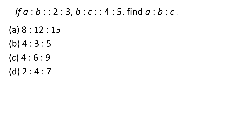Here we have A:B = 2:3 and B:C = 4:5. Find A:B:C. A:B is given by 2:3 and B:C is given by 4:5. We need to find A:B:C. This is a very basic concept but we are going to use it everywhere — the combination or merging of these two ratios into one ratio of A:B:C.